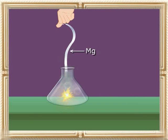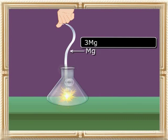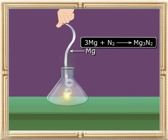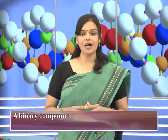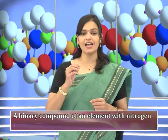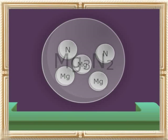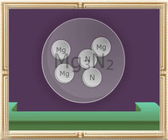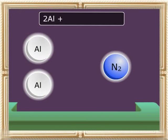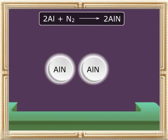For example, in the case of burning magnesium with nitrogen, magnesium nitride will be formed. A binary compound of an element with nitrogen is called a nitride. Magnesium nitride is a binary compound that consists of magnesium and nitrogen. Similarly, when nitrogen reacts with aluminium it forms aluminium nitride.